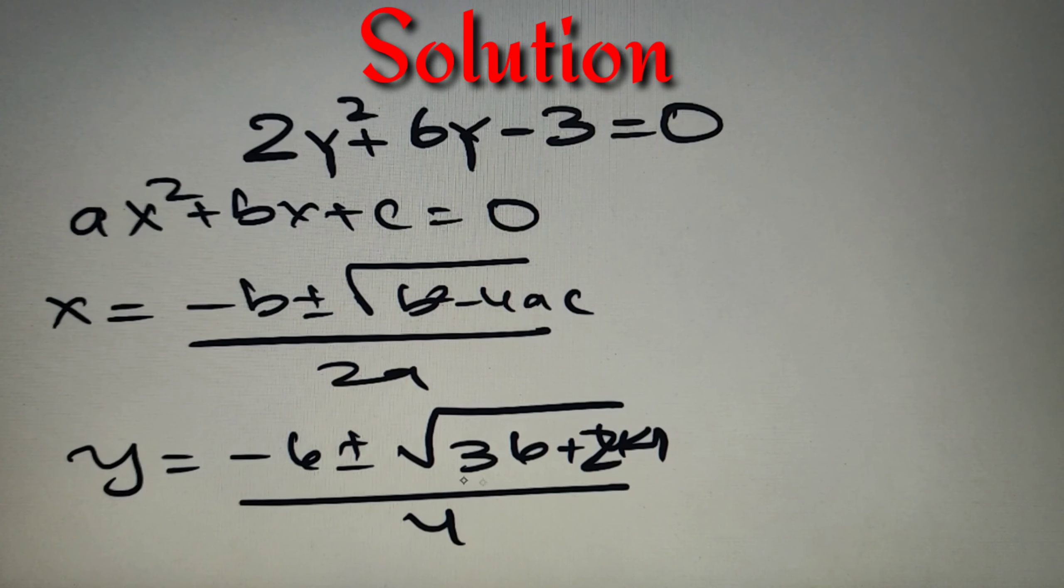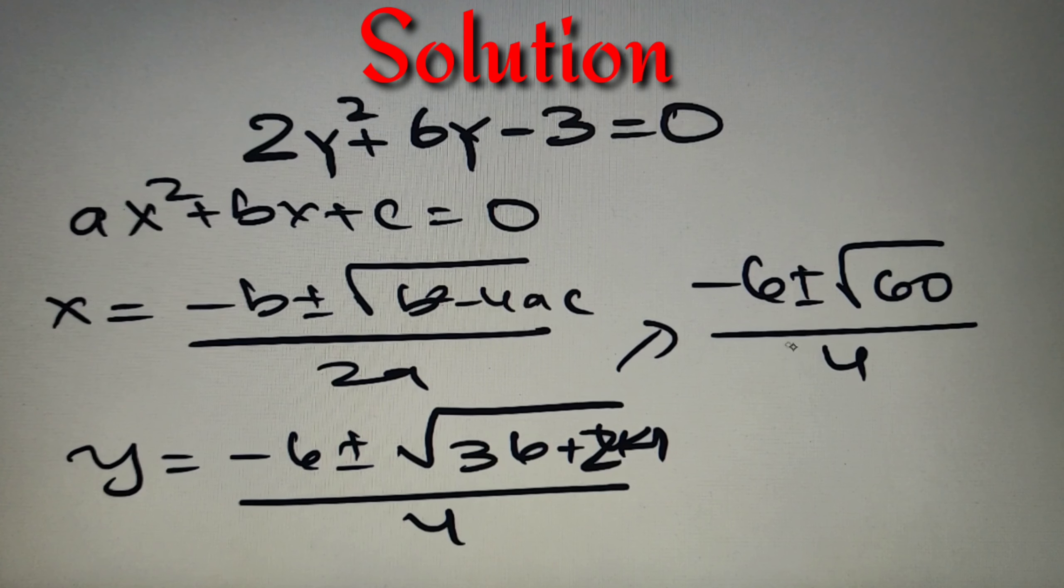Now we will get two roots: minus 6 plus minus under root of 36 plus 24 by 4. So we have got the value of y as minus 6 plus minus under root 60 whole divided by 4.